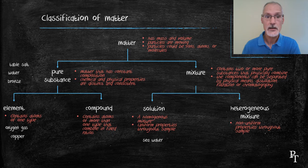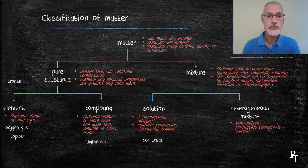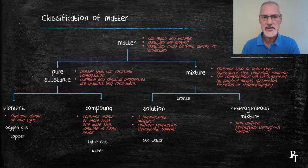Table salt, sodium chloride, a mixture of two atoms. Water, H2O, a fixed ratio. And finally bronze, a mixture of two metals, copper and usually zinc together, form bronze. So this is how we can classify matter.